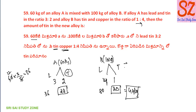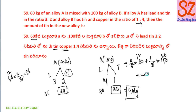Direct method: 2 by 5 into 60 plus 1 by 5 into 100. That equals 24 plus 20 equals 44 kg.